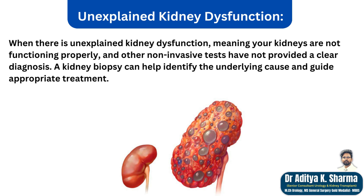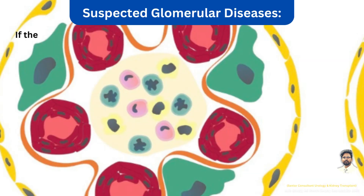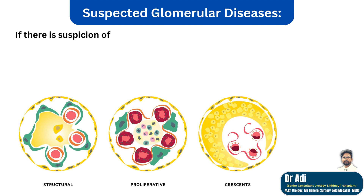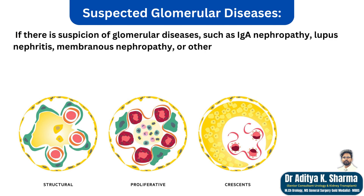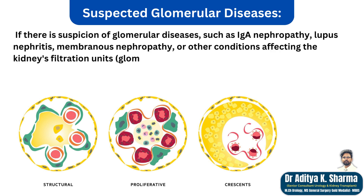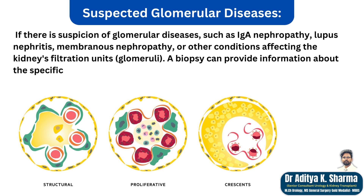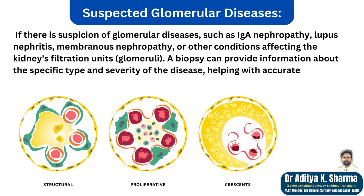If there is suspicion of glomerular diseases such as IgA nephropathy, lupus nephritis, membranous nephropathy, or other conditions affecting the kidneys' filtration units (glomeruli), a biopsy can provide information about the specific type and severity of the disease, helping with accurate diagnosis and treatment planning.